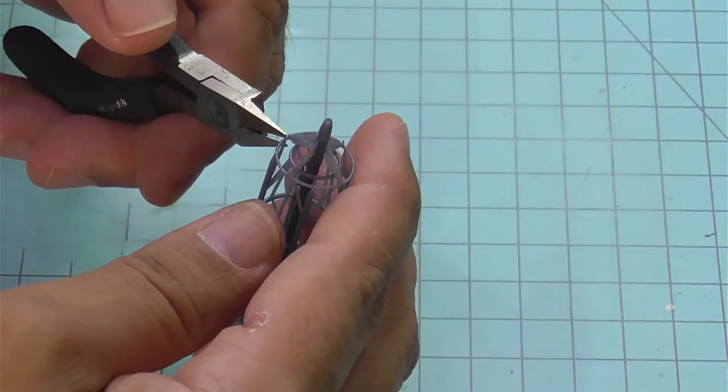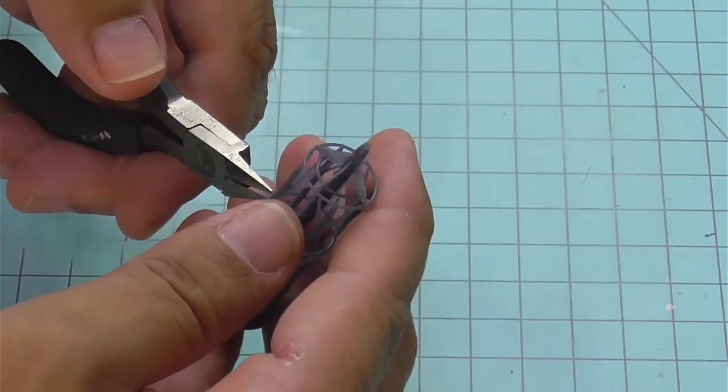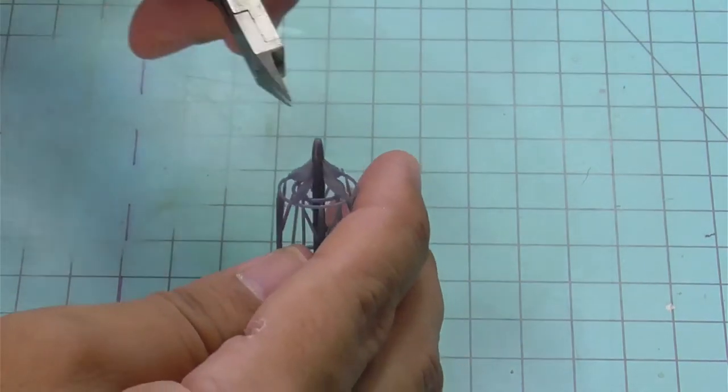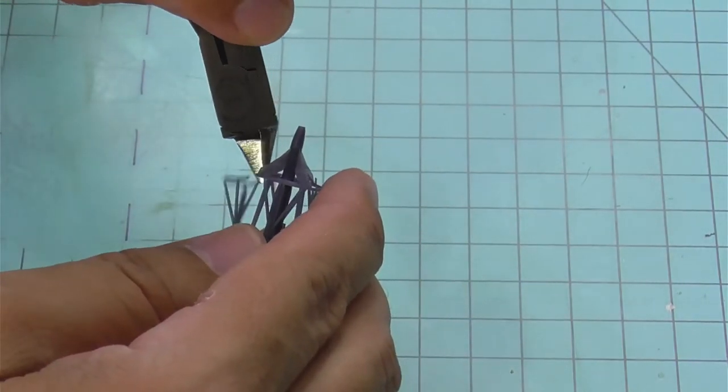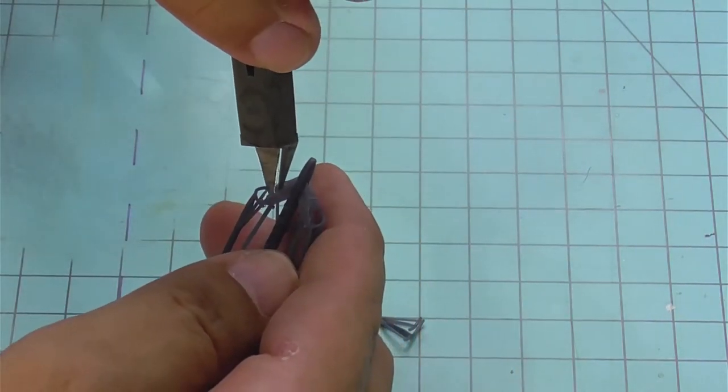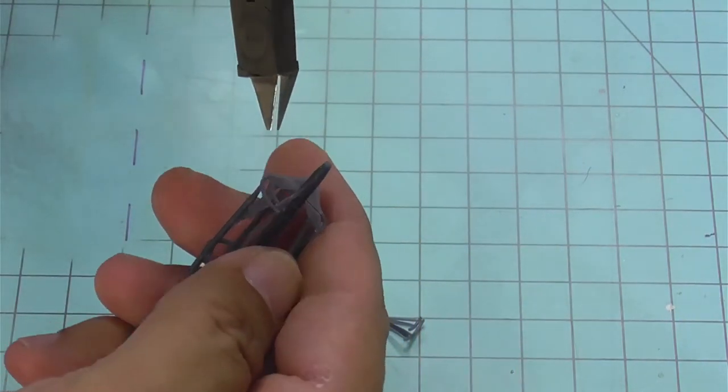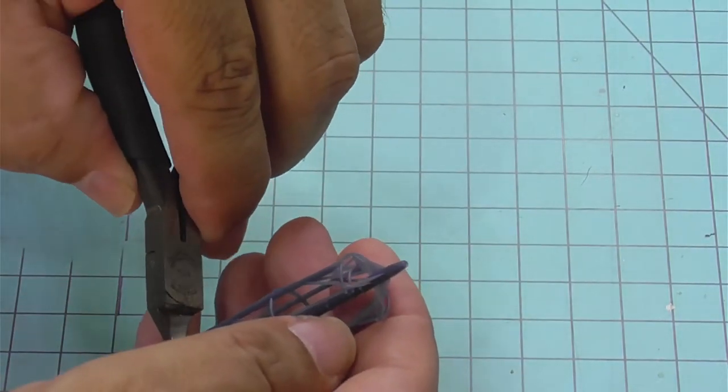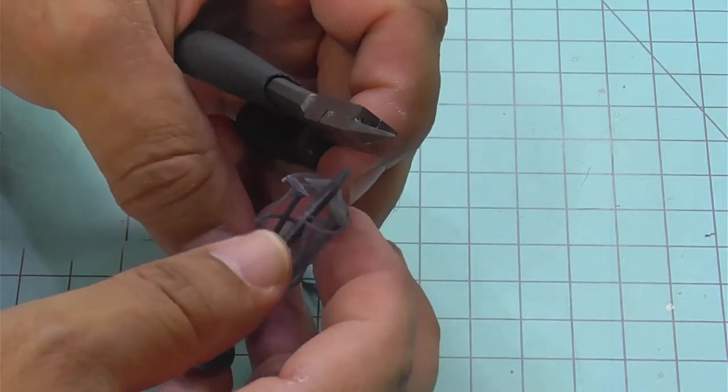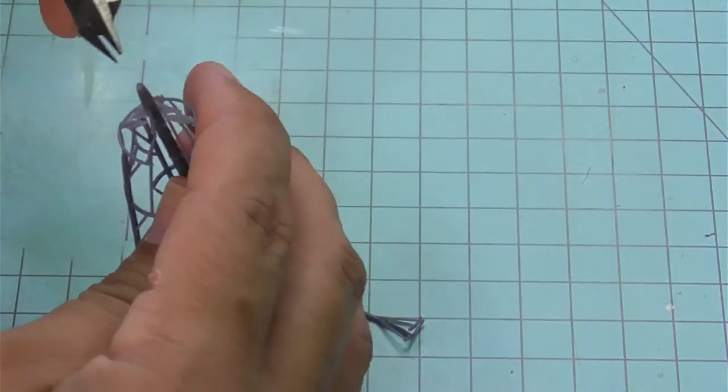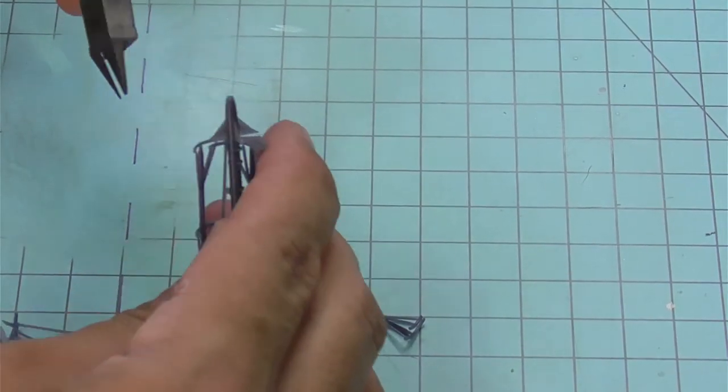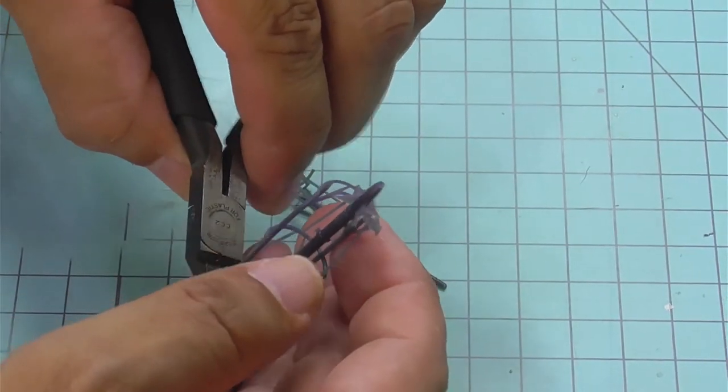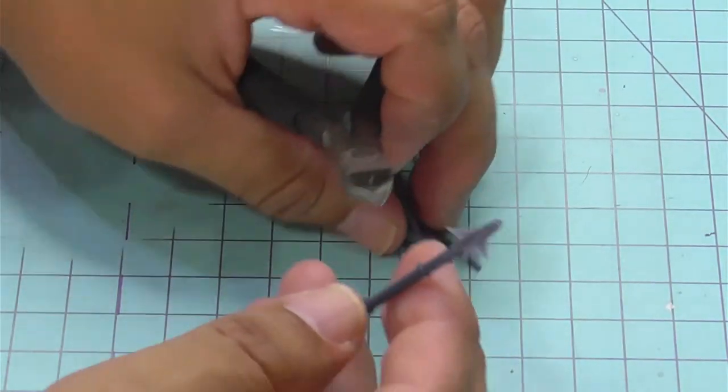Just kind of go through and very carefully trim the rest of the cage away.